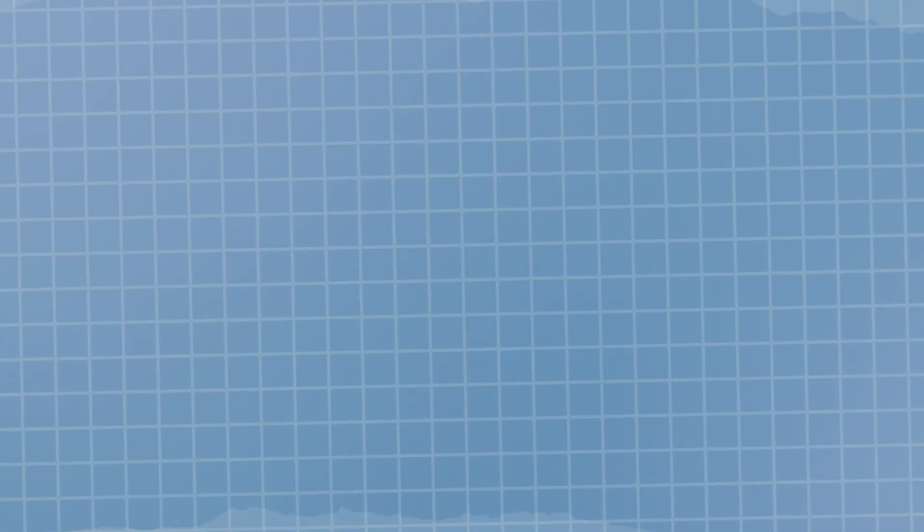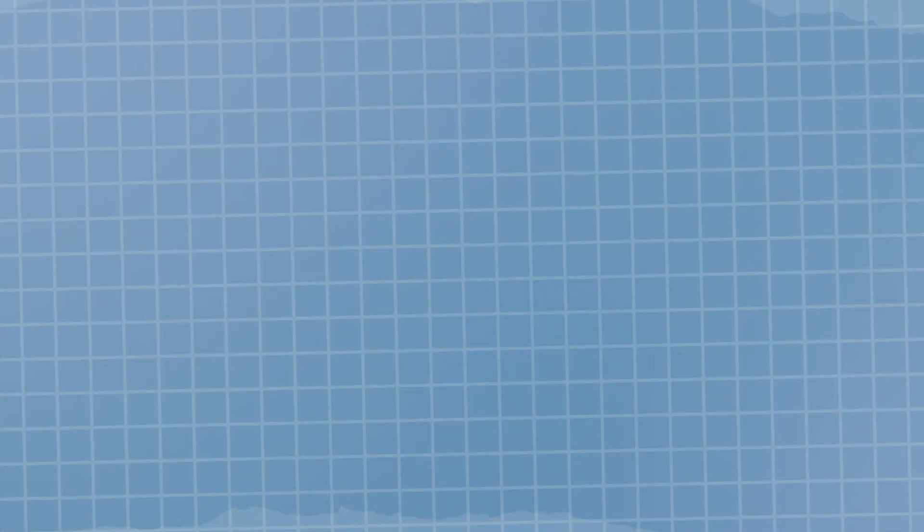You might be thinking, why would this be useful? Well, in the first place it can give you a really good starting point to start thinking about a new physical system comparing to one that you already know and have similar aspects. In particular, it calls to our attention pairs of variables such as force and displacement, stress and strain, voltage and current, which are related to energy. They are the so-called thermodynamic conjugate variables and are essential in a description of the internal energy of a system.